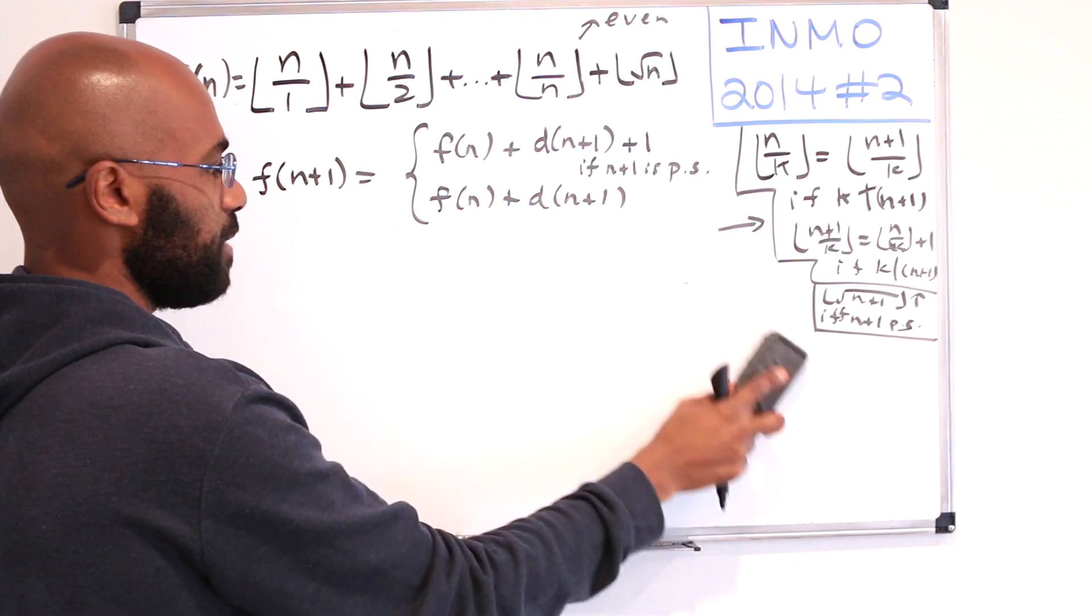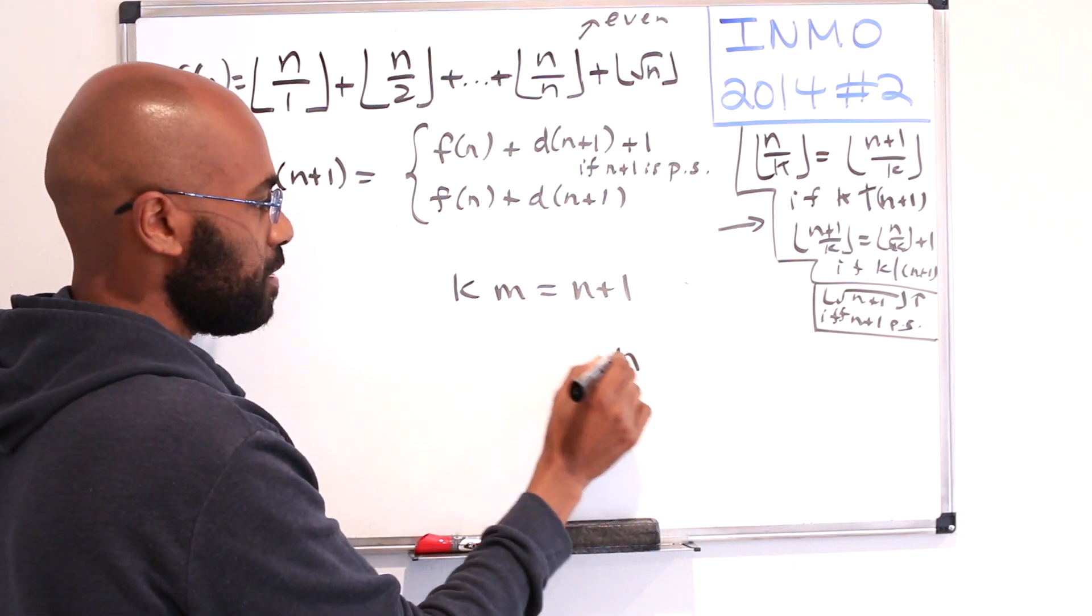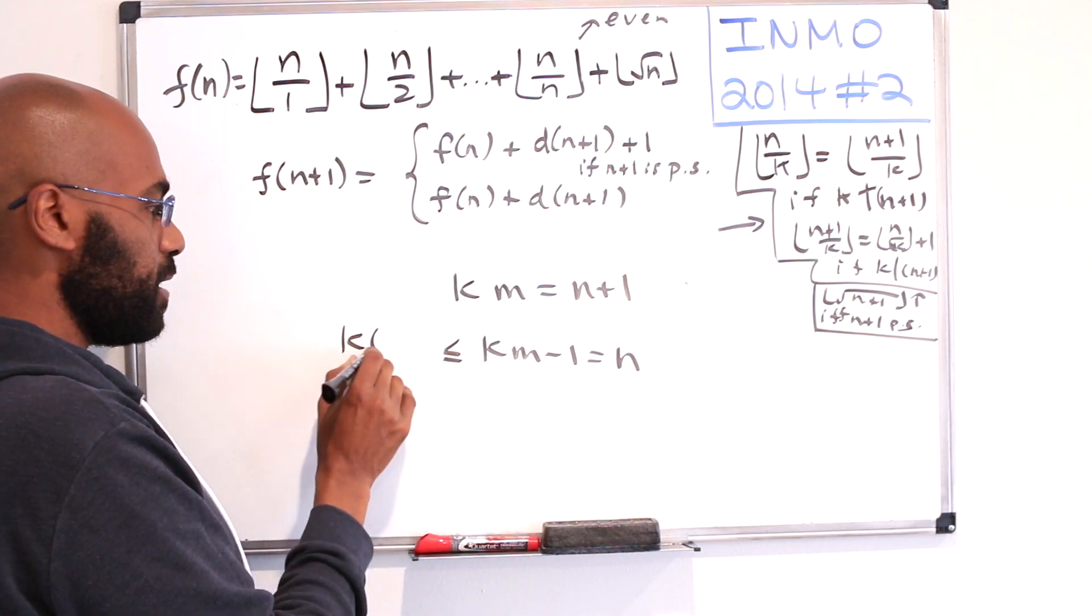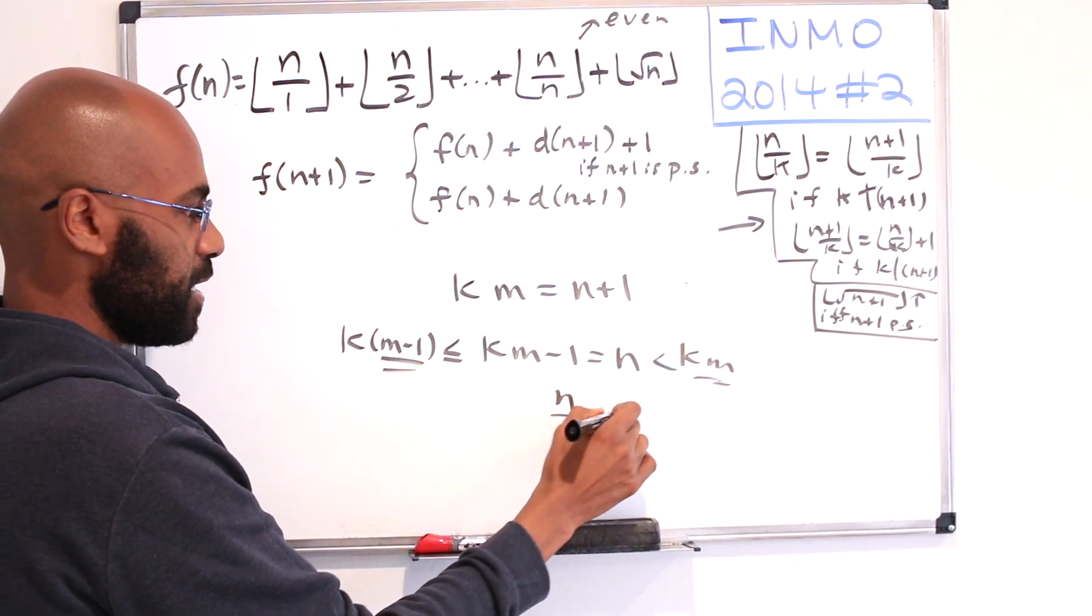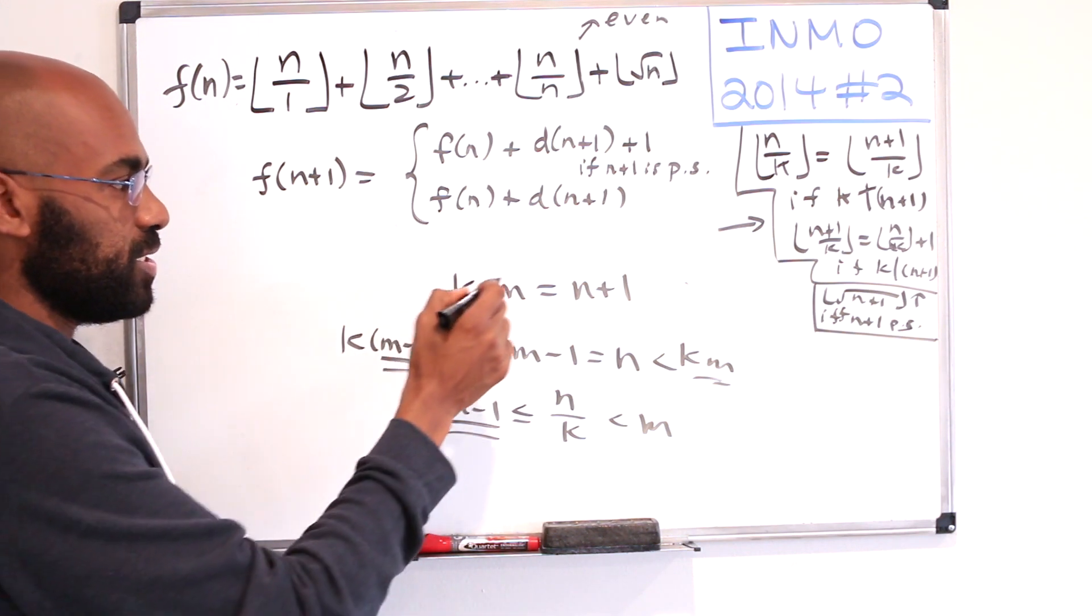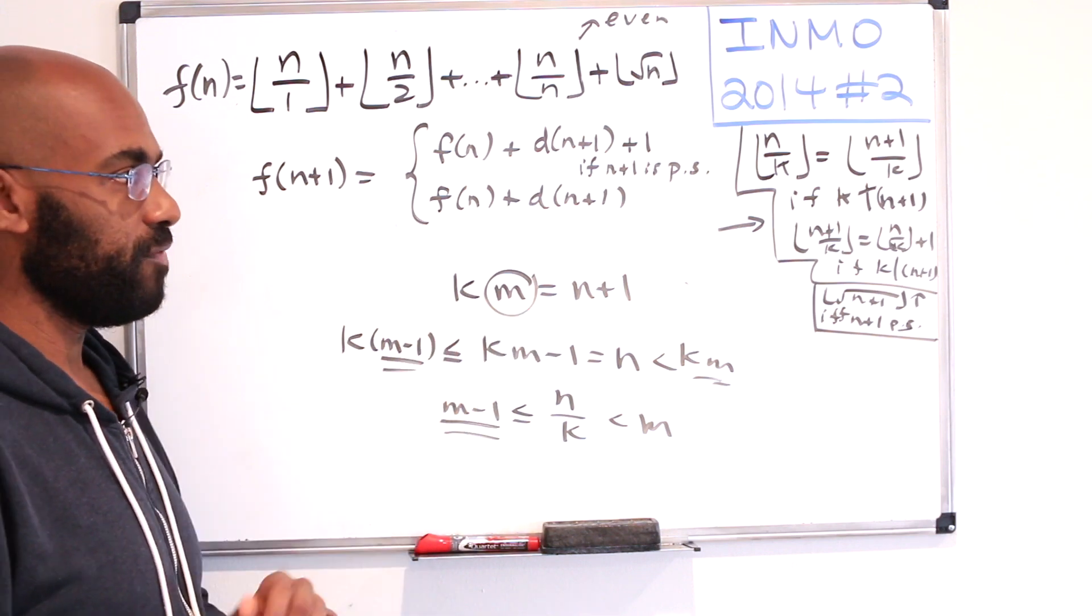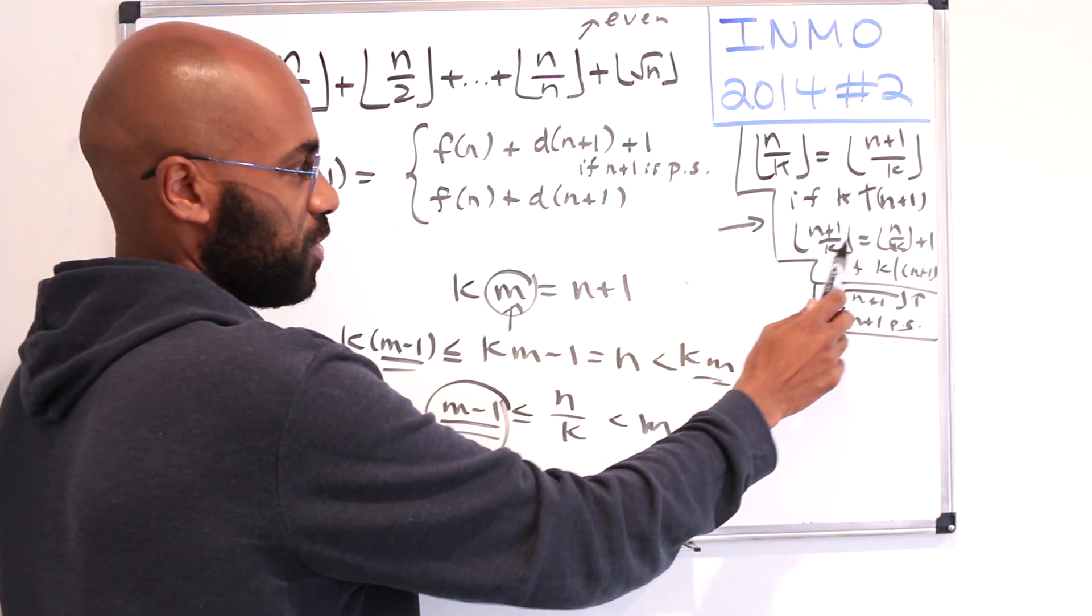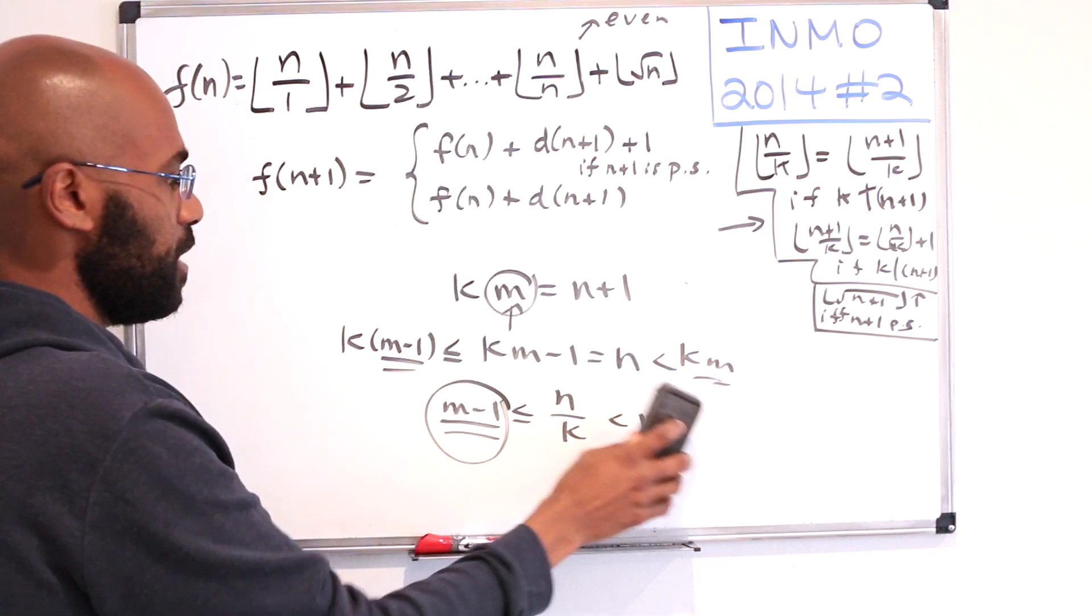What happens if k divides n+1? If k divides n+1, we have n+1 is k times n. And so n is k times n minus 1. So it's strictly less than kn but it's greater than or equal to the quantity kn-1. And so when we divide it by k we get that it's strictly less than n and greater than or equal to n-1. So its floor is actually n-1 which is exactly one less than this value right over here n+1 over k which is the floor of n+1 over k because k is a factor of n+1. So indeed this is the floor of n over k, this is the floor of n+1 over k, so the floor of n+1 over k is one more than the floor of n over k.